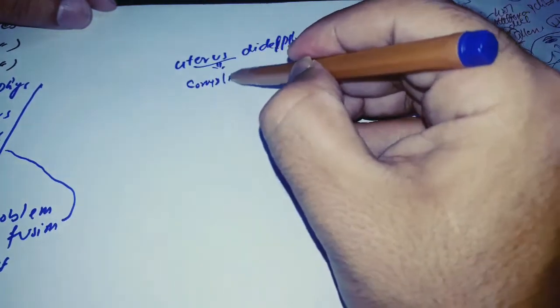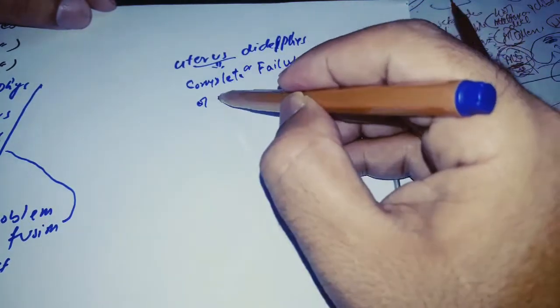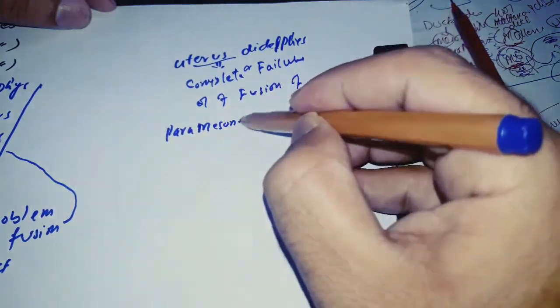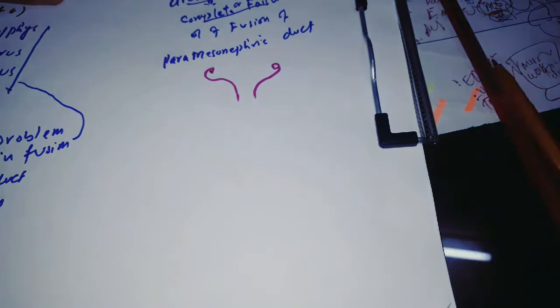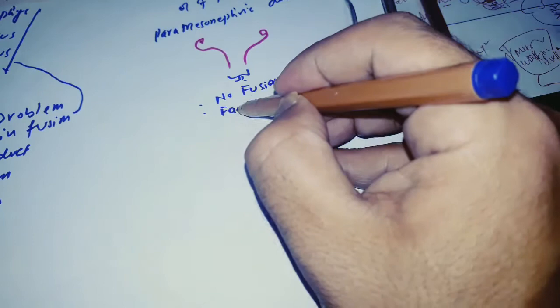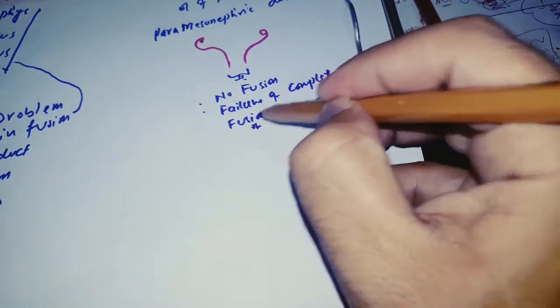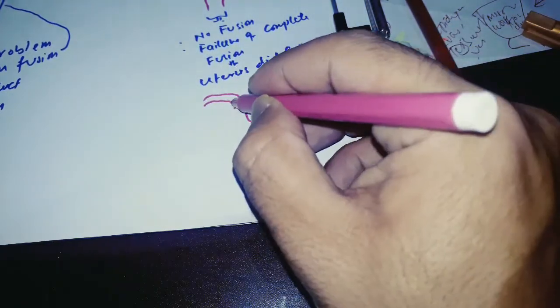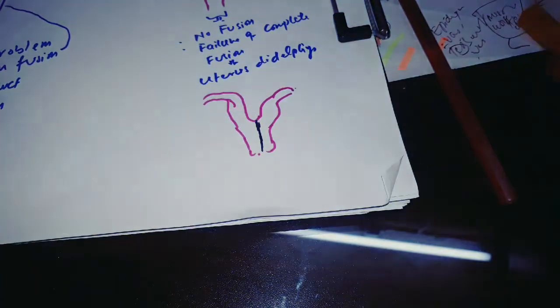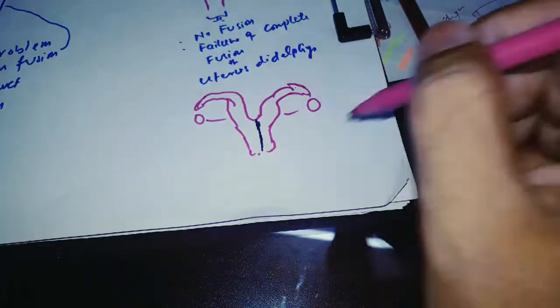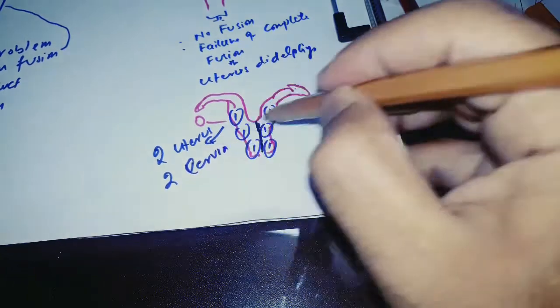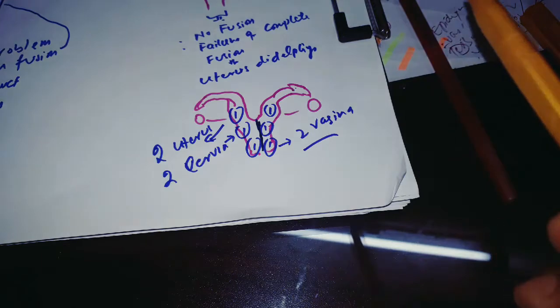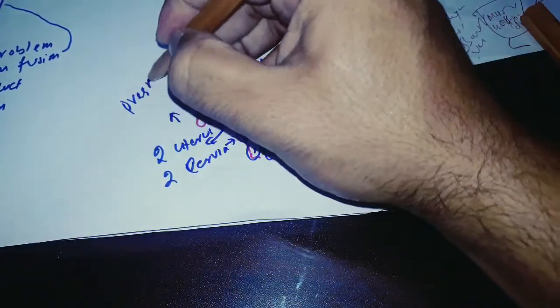Uterus didelphys is the complete failure in fusion of the paramesonephric duct (Müllerian duct) — both ducts do not fuse at all. In the diagram, you can see there will be two uteri, two cervices, and two vaginas. Two fallopian tubes is normal, but here there are two uteri, two cervices, and two vaginas. Pregnancy is still possible in uterus didelphys.